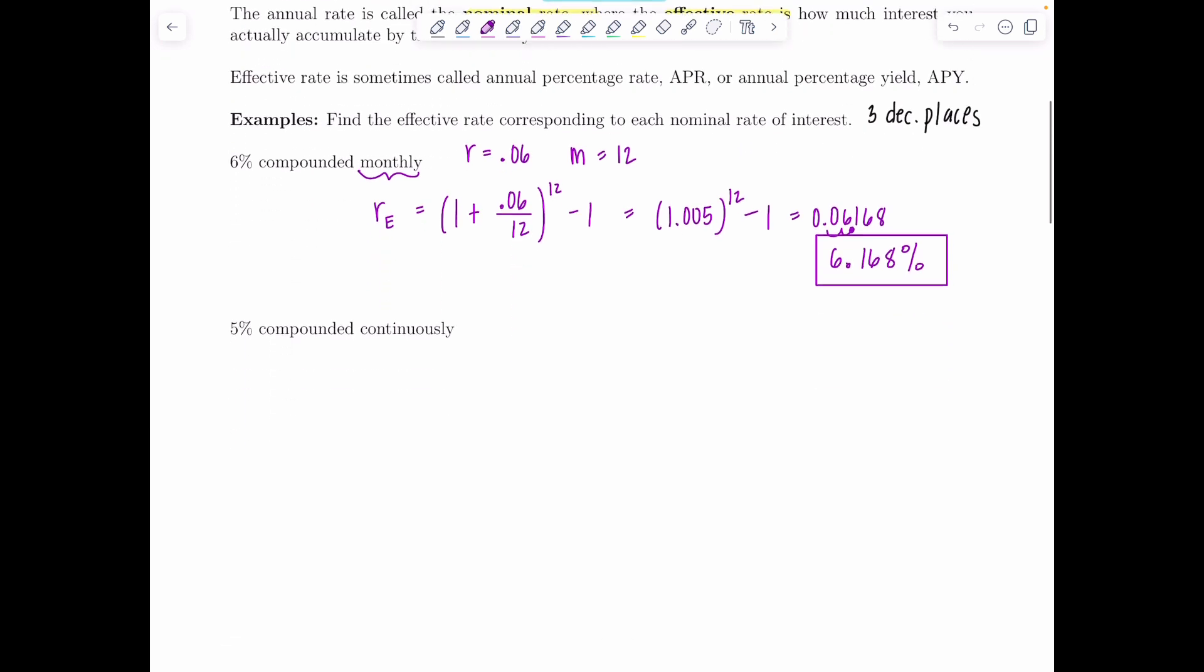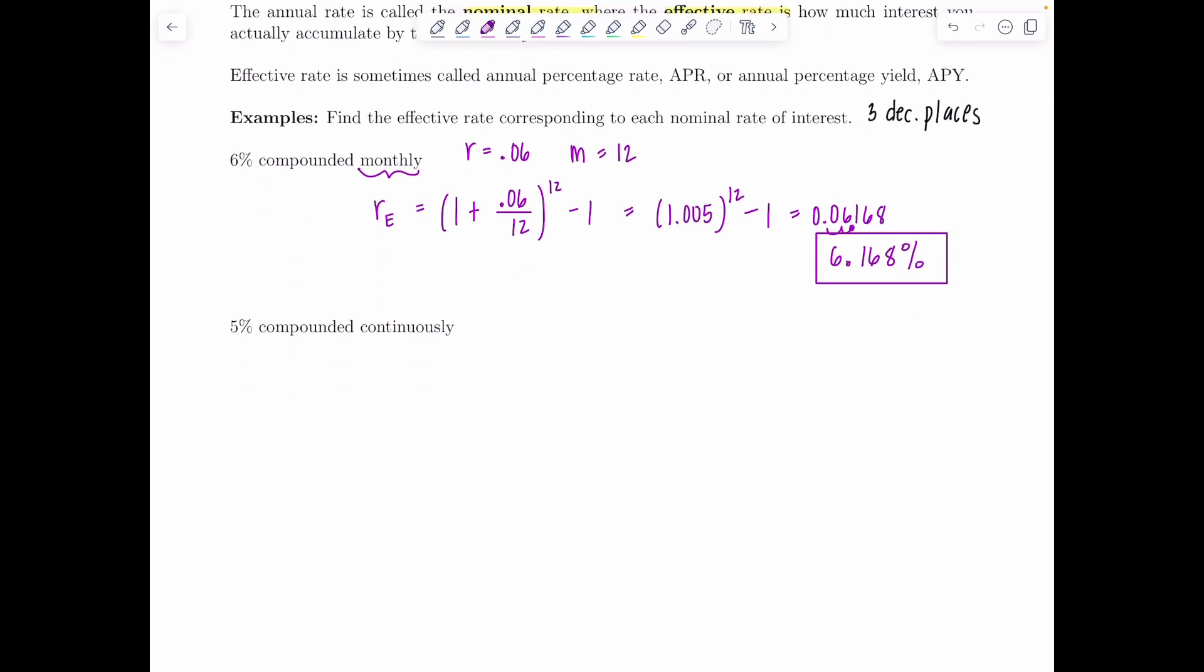Now let's look at 5 percent compounded continuously. So now the effective rate when we're dealing with continuously compounded interest is E to the R minus 1. So this would be E to the 0.05 minus 1 and then you should have that button ready to go on the calculator. E to the 0.05 is about 1.05127 and then minus 1 I get about 0.051271. So rounding to three decimal places as a percent this would be 5.127 percent.